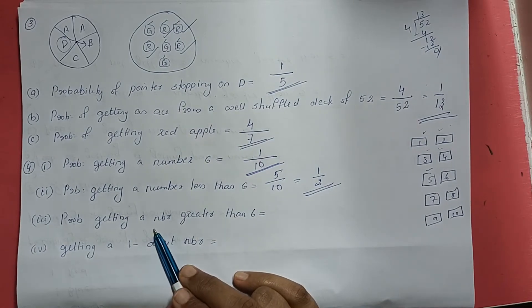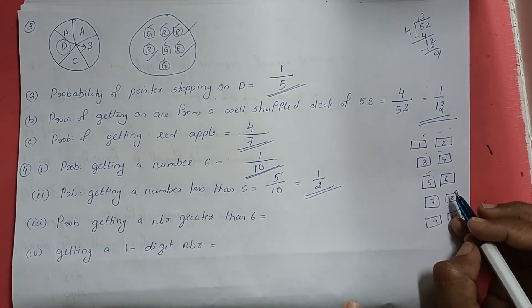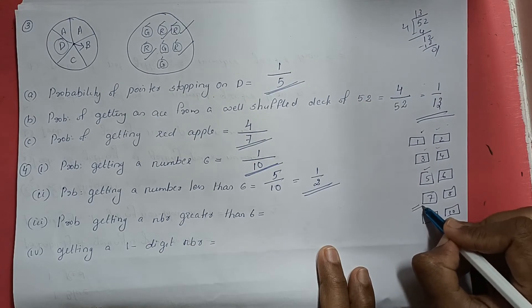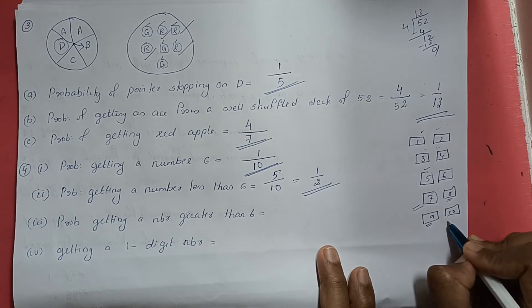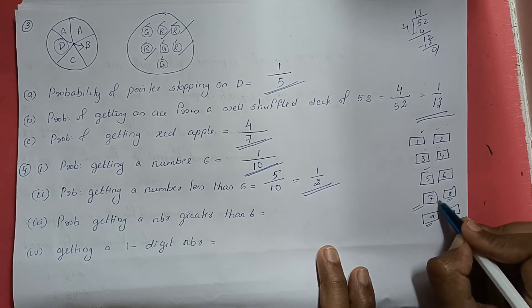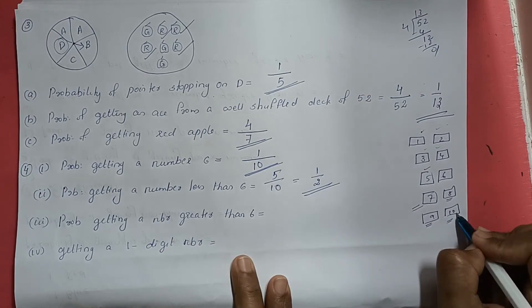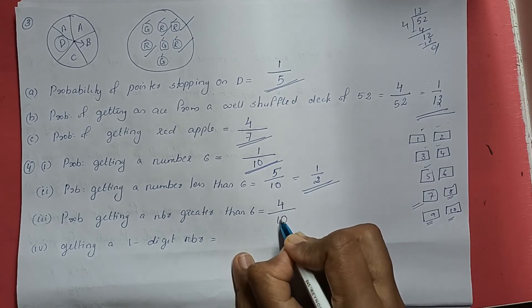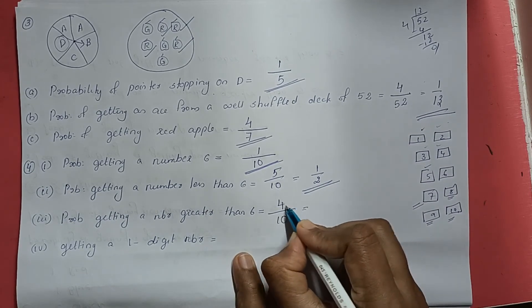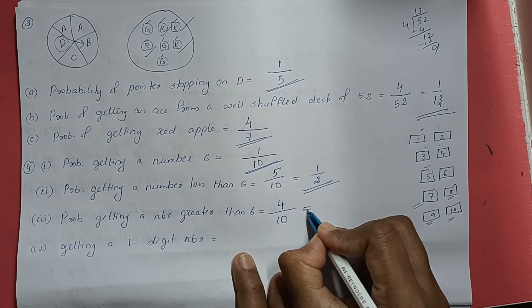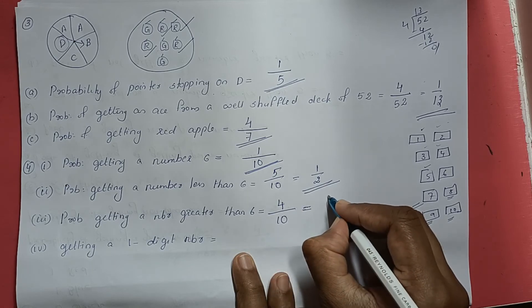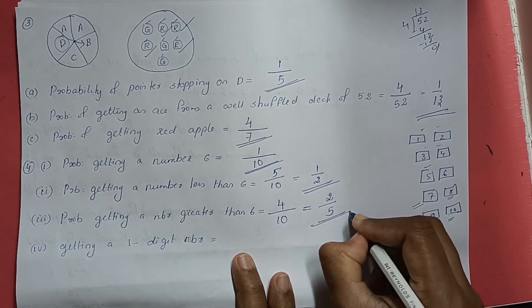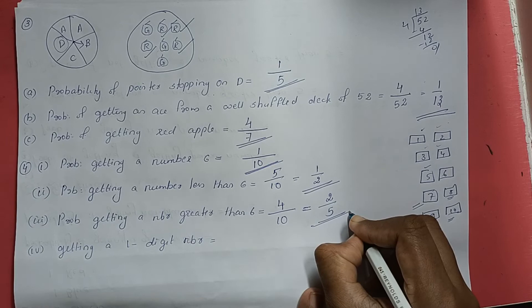Next, probability of getting a number greater than 6. Numbers greater than 6 are 7, 8, 9, and 10 — that is 4 numbers — divided by total which is 10. We write in lowest form: 2 twos are 4, 5 twos are 10, so the probability is 2 by 5.